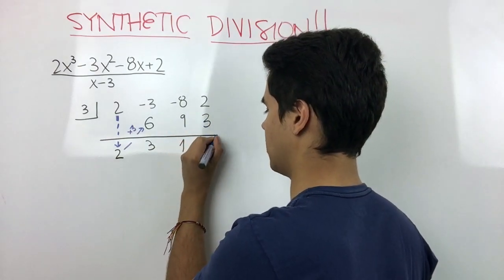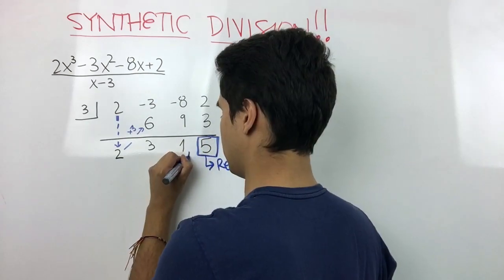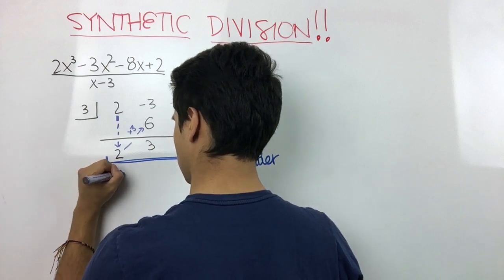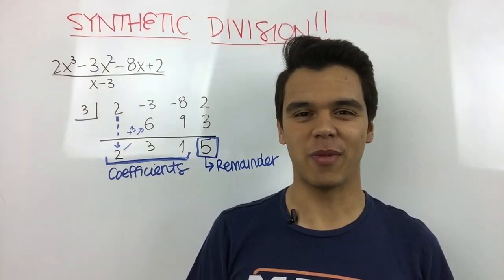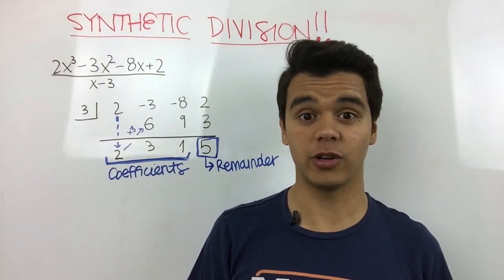So this last number is going to be our remainder, and these three numbers are going to be our coefficients. Finally, we have to rewrite those coefficients.